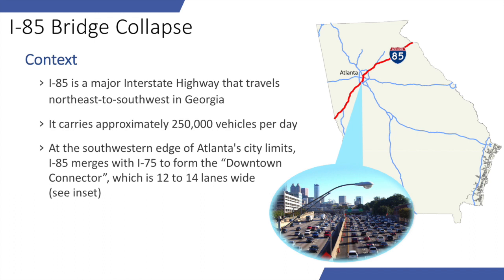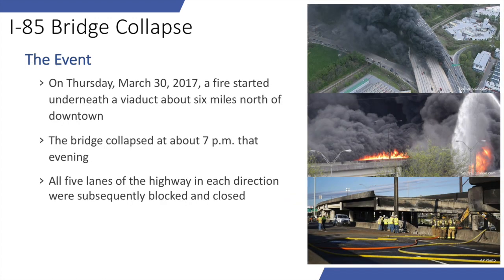We've done the same analysis for I-85 in Atlanta during their bridge collapse. It's a major interstate running right through the heart of Atlanta, carrying around 250,000 vehicles per day. On Thursday, March 30th, a fire started underneath a viaduct about six miles north of downtown — you can see a picture of the fire. The bridge then collapsed at about 7 p.m. that evening.